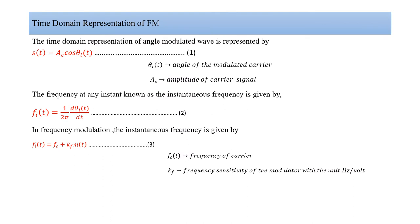The time domain representation of the FM signal uses the same general formula: s(t) = Ac·cos(θᵢ(t)), where θᵢ(t) is the angle of the modulated carrier and Ac is the amplitude of the carrier signal. The instantaneous frequency, as per the derivative law, is given as fᵢ(t) = (1/2π)·dθᵢ(t)/dt. In frequency modulation, fᵢ(t) = fc + kf·m(t), where kf is the frequency sensitivity of the modulator with units of hertz per volt.